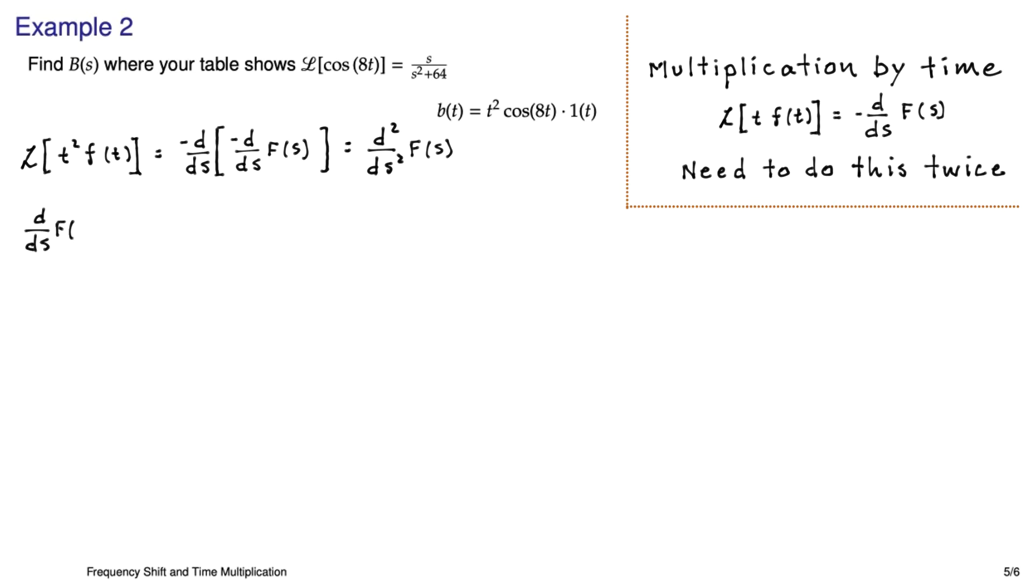Except we have to take two derivatives of the F(s) that is s over s²+64. So the first derivative looks like this. I'm using the quotient rule. So we take the derivative of the top multiplied by the denominator minus the derivative of the denominator which is 2s times the numerator and then divided by the denominator squared. So that's not too bad. We can simplify that just a little bit, and we get this.